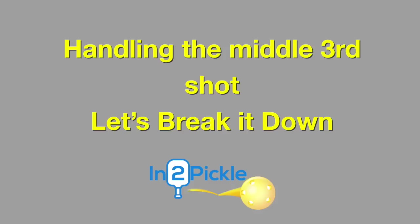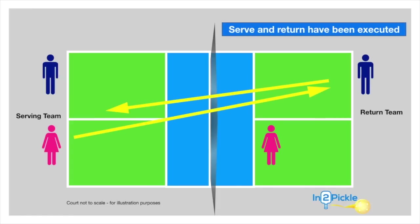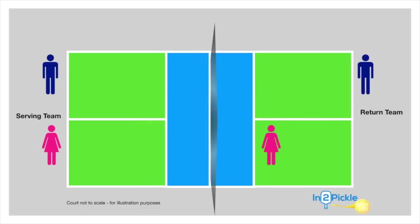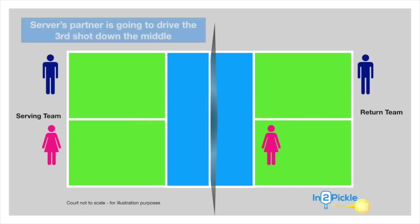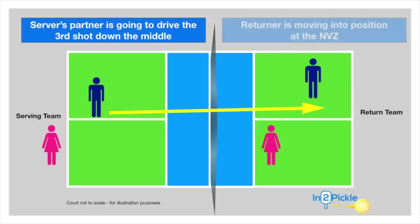Before we get into some real-life examples of the down-the-middle shots, we'll use our high-budget graphics to explain the strategy and the concepts. This is a return team strategy — the serve and return have already been executed, so the question is what to do with the next shot by the serving team, the third shot. In this case, we're dealing with a third shot drive down the middle, shown by the arrow.